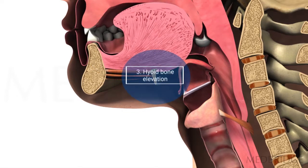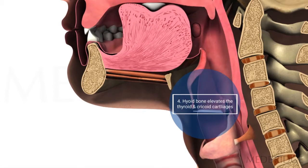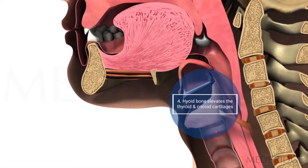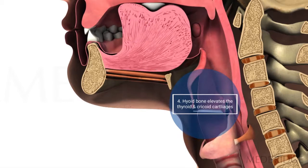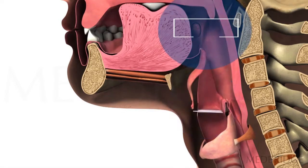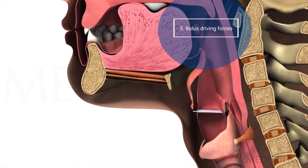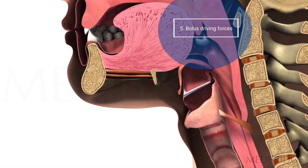Number three: because of its connections to the thyroid and cricocartilage in the laryngeal region, the whole laryngeal complex is elevated. That whole activity, in addition to the force and size of the bolus itself, extends the opening of the UES.